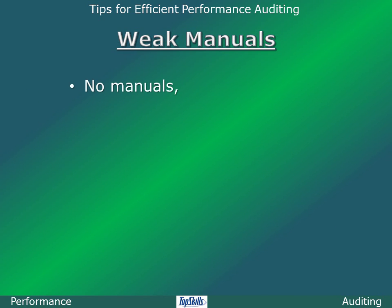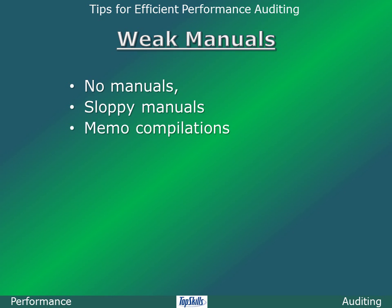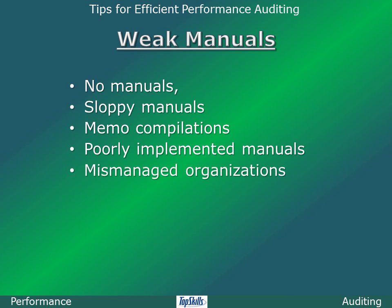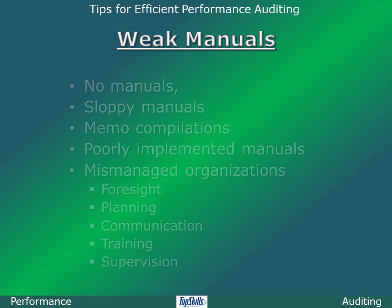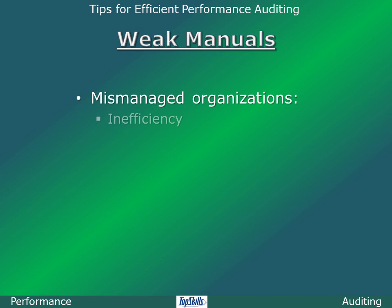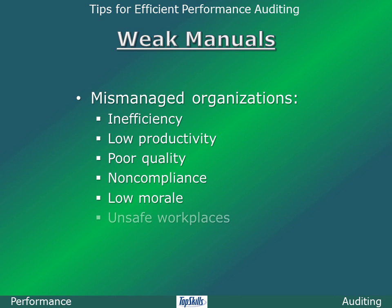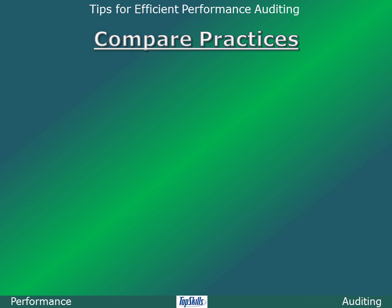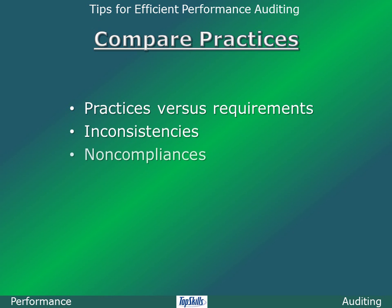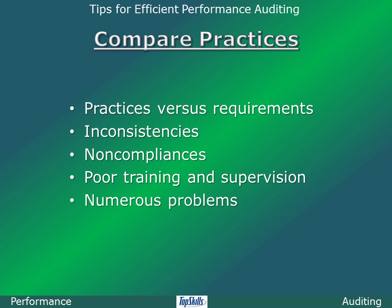Organizations with no manuals, sloppy manuals, memo compilations, or poorly implemented good manuals are mismanaged. They reveal a lack of foresight, planning, communication, training, and supervision. In such organizations, you will likely find inefficiency, low productivity, poor quality, non-compliance, low morale, unsafe workplaces, and other serious problems. Compare practices in the organization to what is required in its policy and procedure manual. Assuming the manual is worthwhile, inconsistencies and non-compliances indicate poor training and poor supervision, and you are likely to find numerous problems in such organizations.